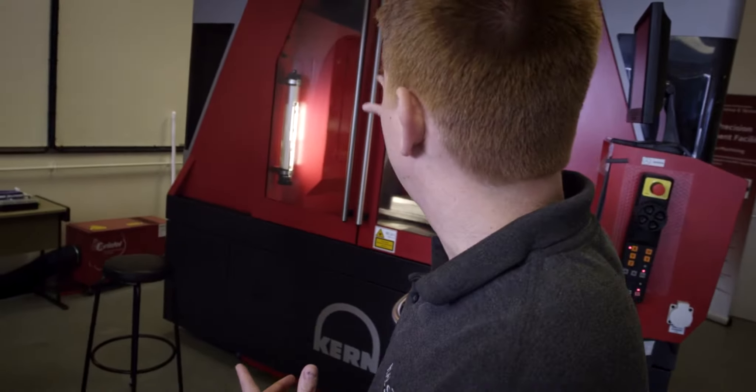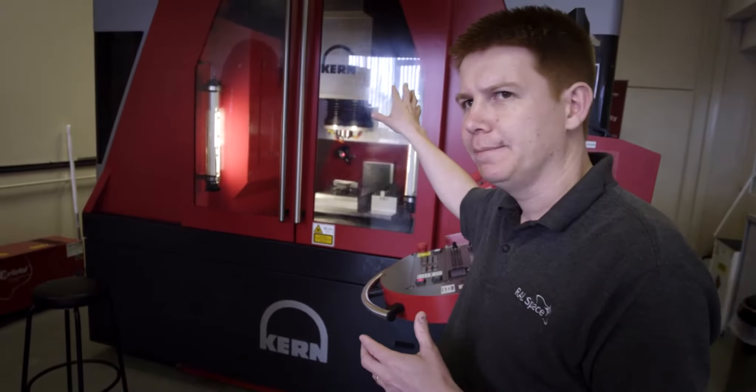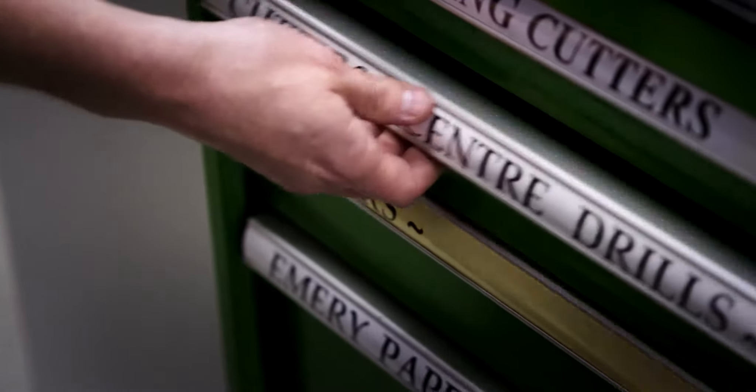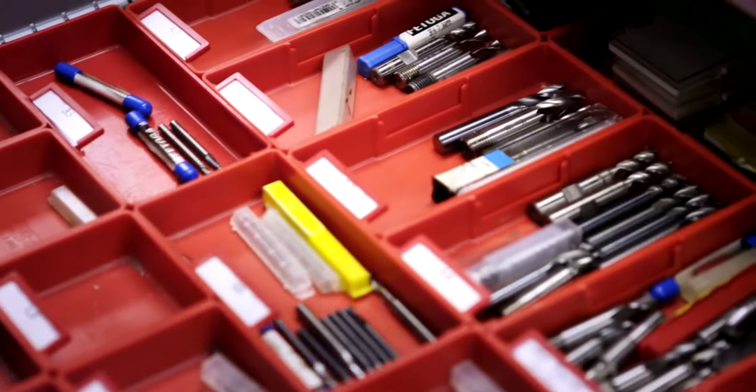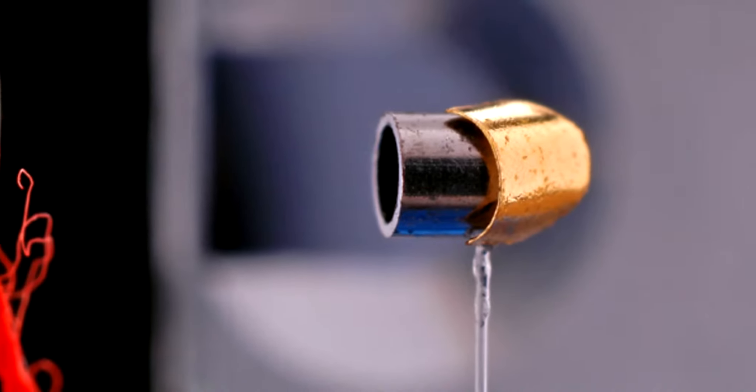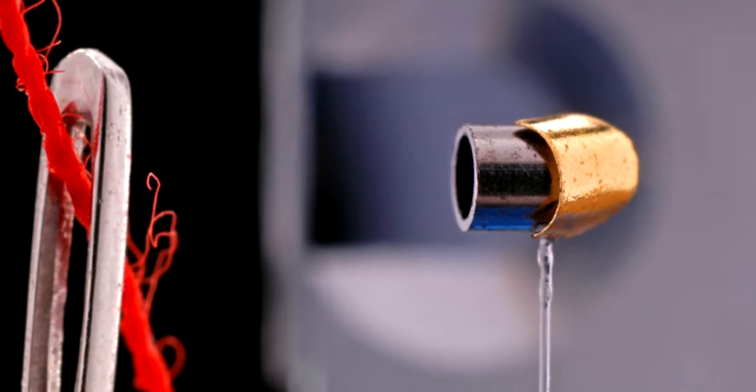This is a flagship model, Kern Primer Nano. There's only four of these in the UK, very accurate machine. We use cutters as small as a hair on this machine to be able to drill holes and machine some of the complex features on some of the devices we're involved in making.